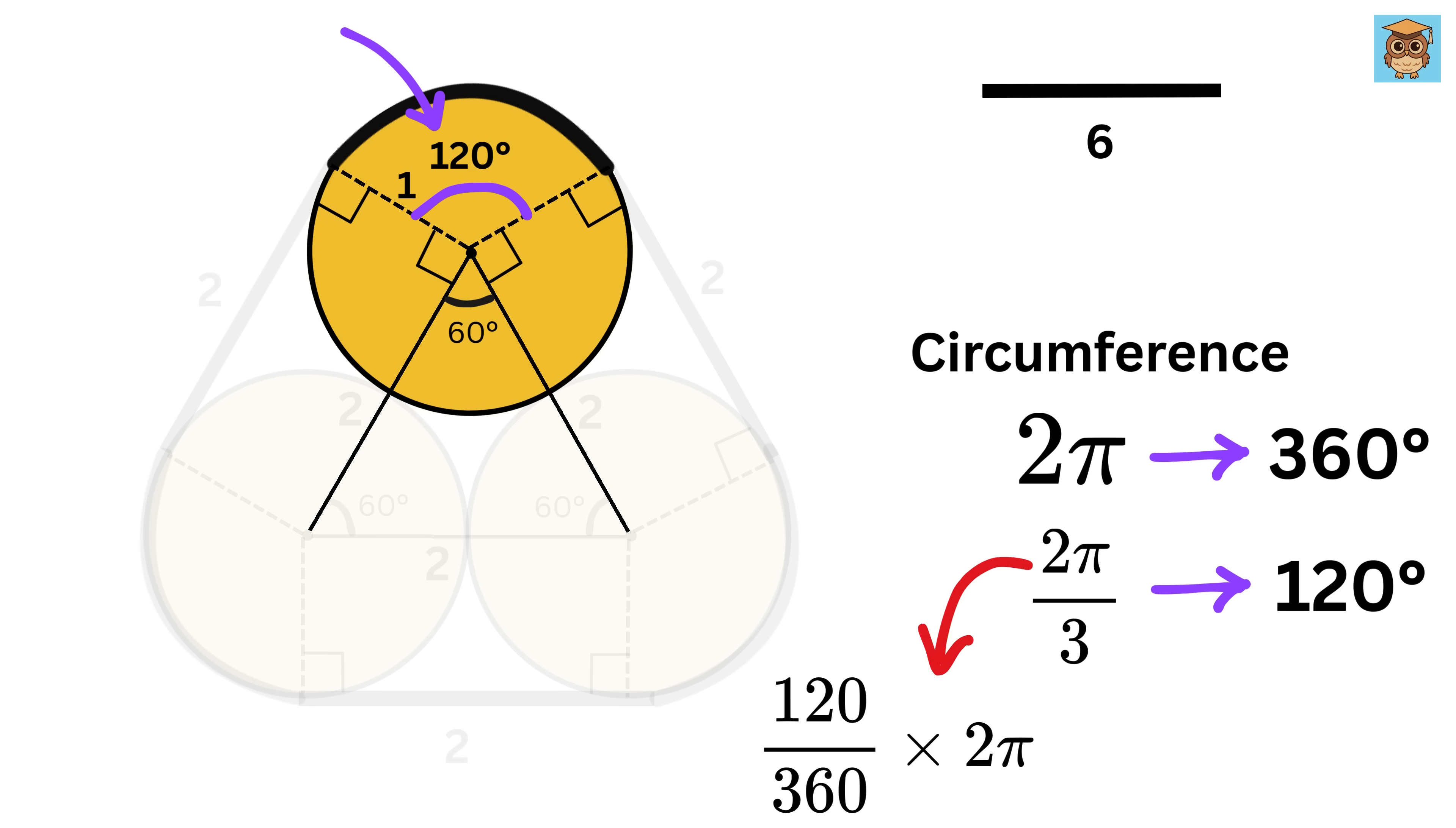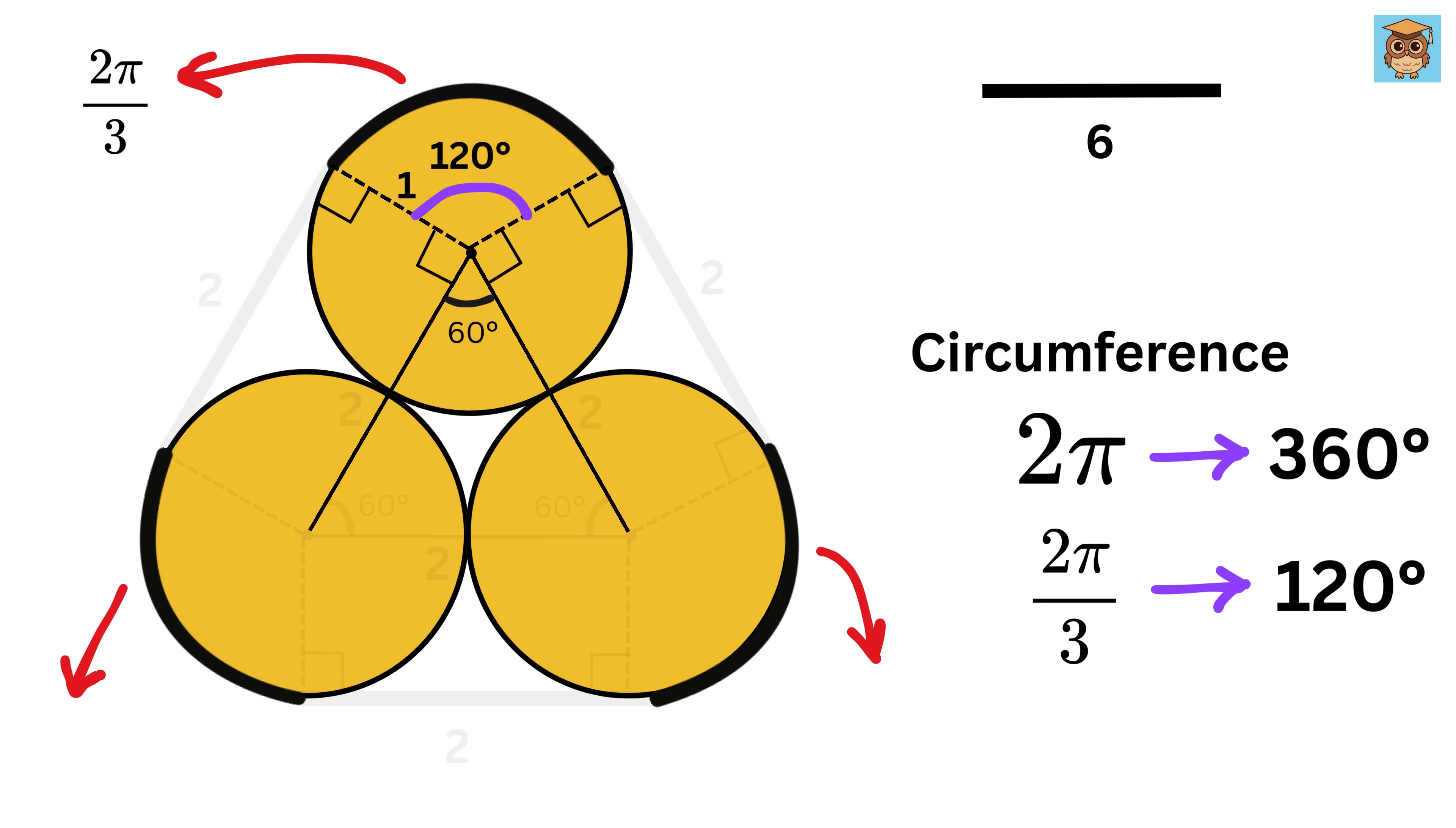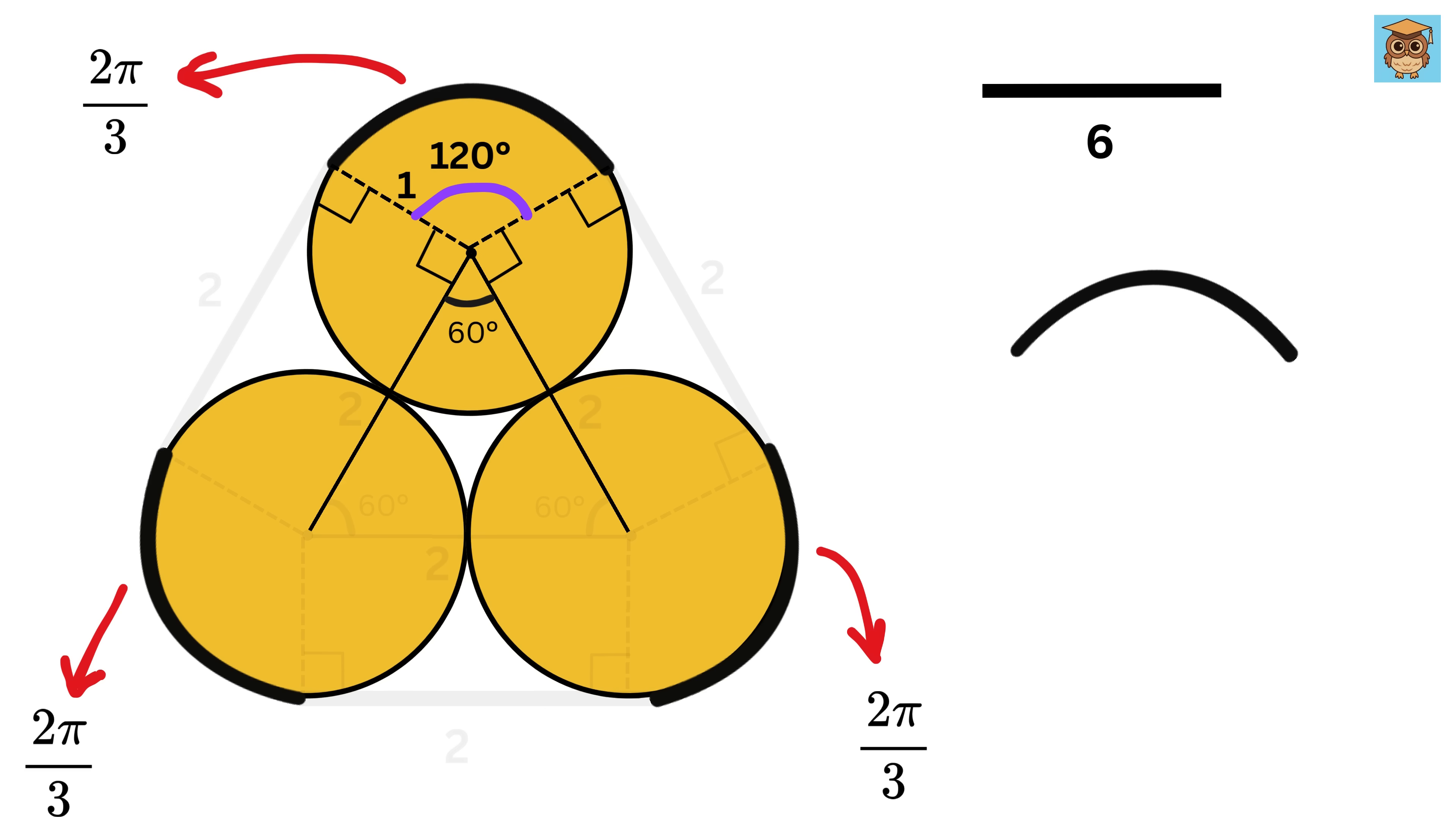So the length of this curved part of the band is equal to 2π over 3 units. Similarly, the length of the other two curved parts will be equal to 2π over 3.